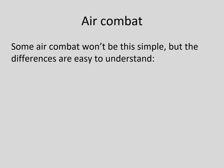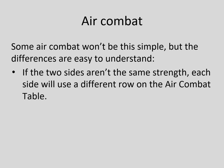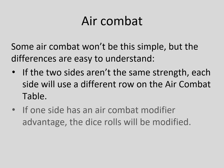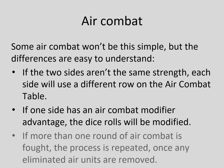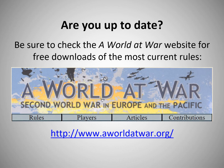Air combat can be more complicated for several reasons. If the two sides aren't the same strength, each side will use a different row on the air combat table. If one side has an air combat modifier advantage, the dice rolls will be modified. If more than one round of air combat is fought, the process is repeated once any eliminated air units are removed. But the basic approach is the same.